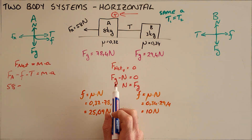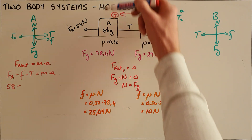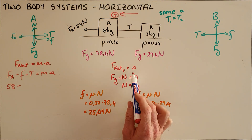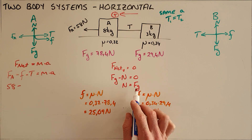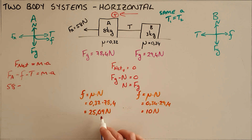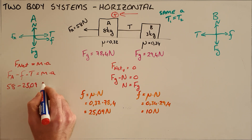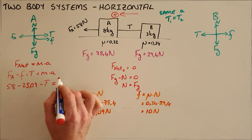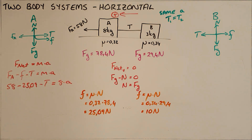Friction is calculated by finding the force of gravity, then recognizing that since there is no vertical acceleration, the net vertical force is zero, so the normal force equals the force of gravity. The frictional force calculates to 25.09 Newtons. Tension is unknown, the mass of object A is 8 kilograms, and the acceleration is unknown.